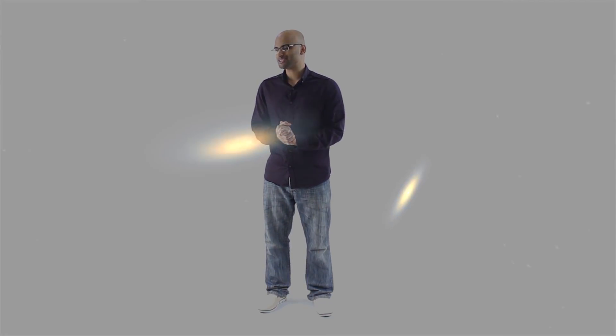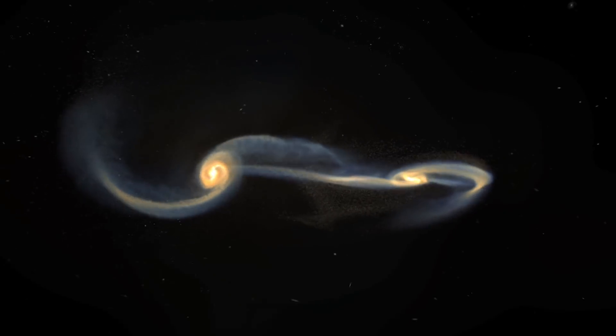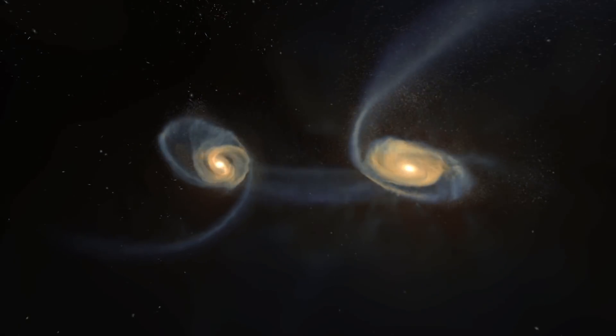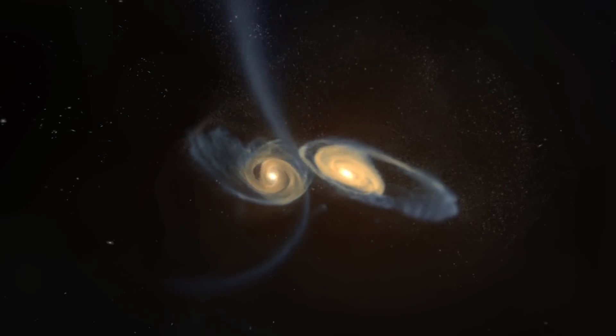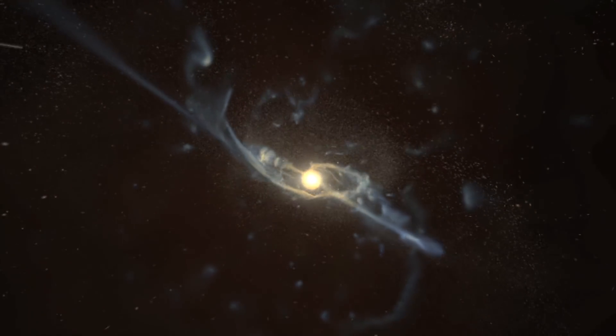This black hole has around 40 billion times more mass than our own sun. This black hole has around 10,000 times more mass than the supermassive black hole that is in the center of our galaxy, the Milky Way. If we took this black hole and replaced our sun with it, which is a really bad idea, its event horizon would extend beyond the orbit of Pluto.